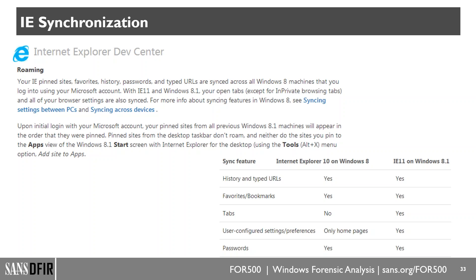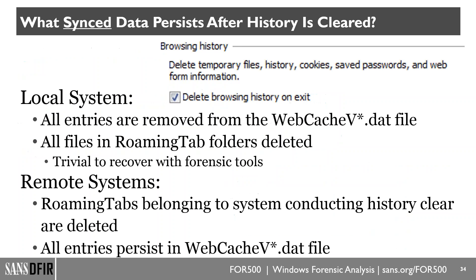For those who think IE 11 has been replaced by Edge — not so. You actually have both IE 11 and Edge simultaneously on Windows 10. The really interesting thing is what data is synced and what persists after history is cleared. On your local system, things are removed from the web cache, but they're still recoverable because it's a database. On remote systems, all the history persists. Even though your history was synchronized to a remote system, clearing history on your local system doesn't clear it on the other — you have to manually log into that second system and clear history there too.